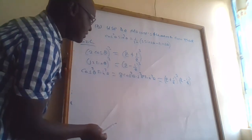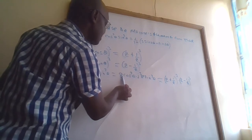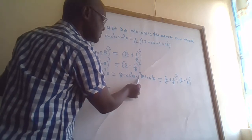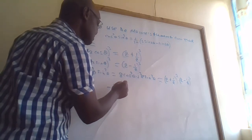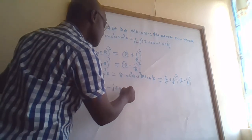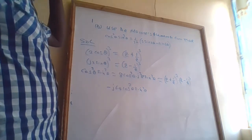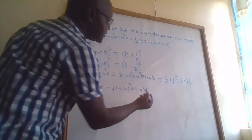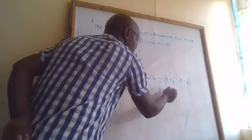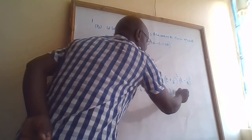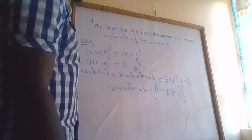Now j³ equals negative 1. Therefore when you multiply here, you get negative j times 64 — since 8 times 8 is 64 — times cos³θ · sin³θ. So we can write this as (z + 1/z) cubed times (z - 1/z) cubed.